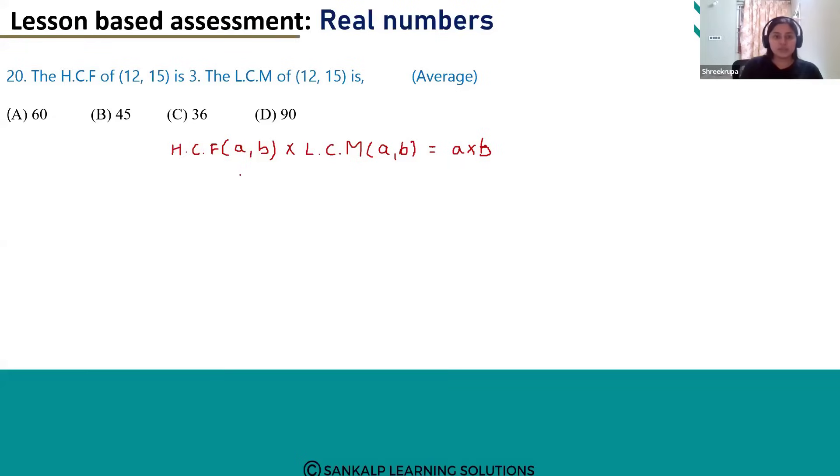Right? So let's substitute the values. HCF of A and B is 3. We don't know the LCM, so let's keep it as it is. What is the value of A here? 12, and the value of B is 15.